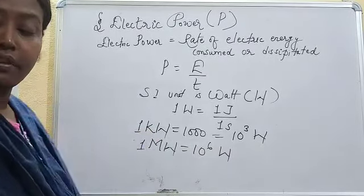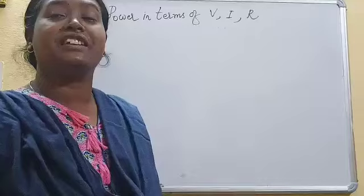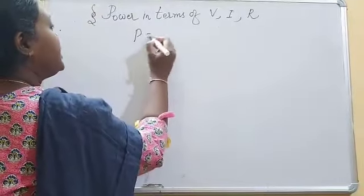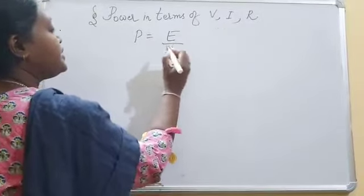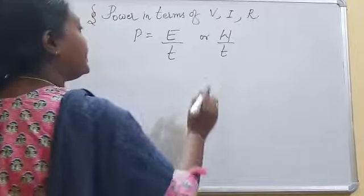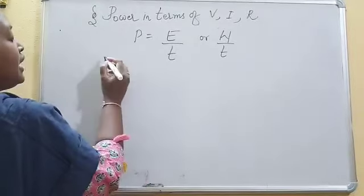Then we will express power in terms of V, I and R. What is the formula for power? Power equals energy consumed upon time or work done upon time, as energy and work are equivalent.